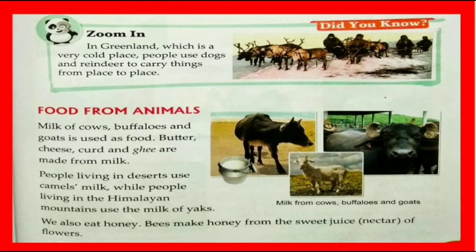Butter, cheese, curd, and ghee are made from milk. People living in deserts use camel's milk, while people living in the Himalaya mountains use the milk of yaks. We also eat honey. Bees make honey from the sweet juice, nectar, of flowers. In the image you can see milk from cows, buffaloes, and goats.